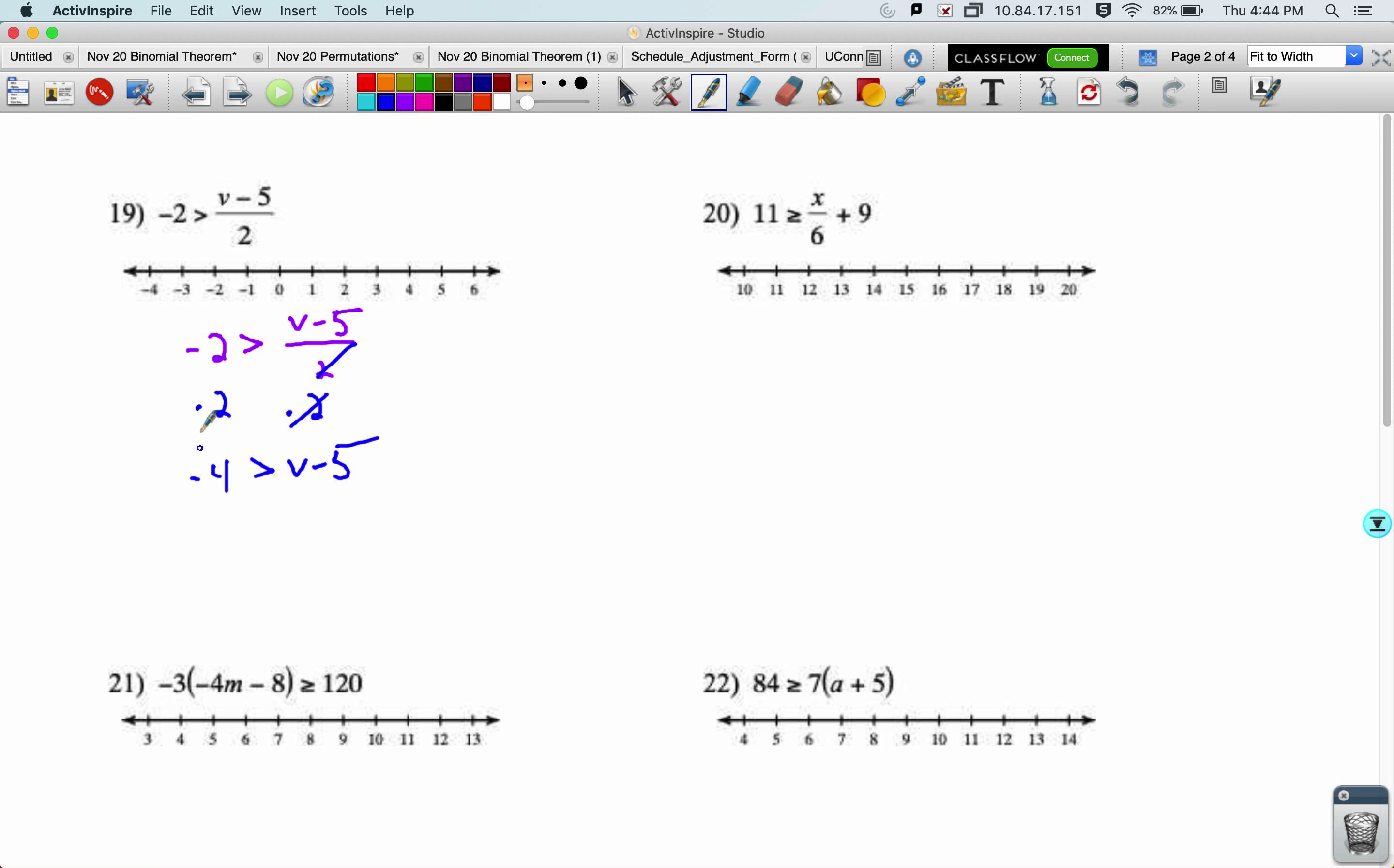So now I've got negative 4 is greater than v minus 5. This is negative. That doesn't mean that the inequality had to flip. It would be if the step is negative, but as you can see, we multiplied by a positive 2. All right, add 5, add 5. We get 1 is greater than v. This is hard to graph, so I switch it around. v is less than 1. Notice the inequality switched too. Open circle at 1. Arrow going to the left.